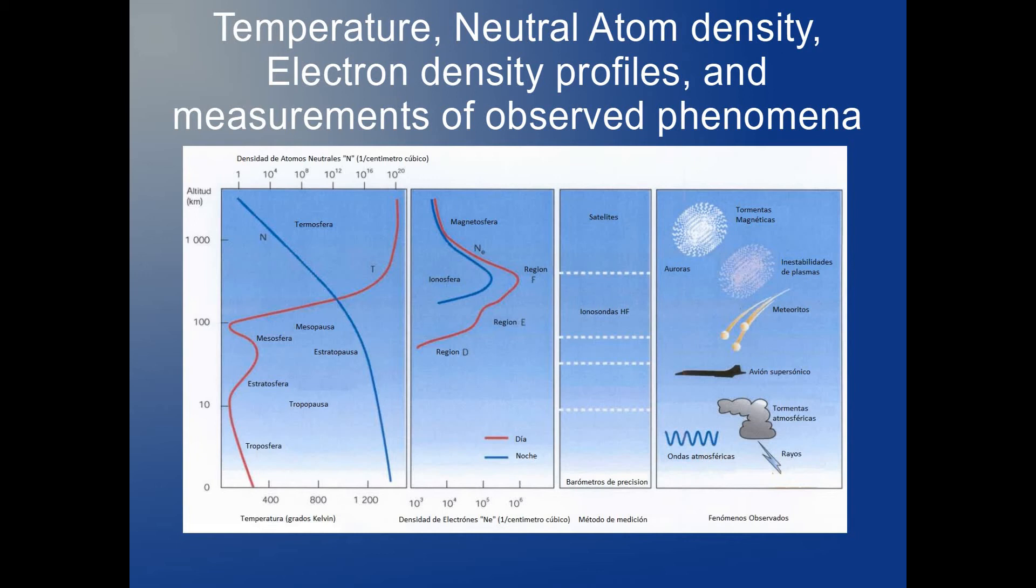The ionosphere was theorized by the German mathematician Gauss in 1839, but it was the experimentalist Guglielmo Marconi from Italy who in 1901 successfully received the first transatlantic radio signal. That transmission originated in Cornwall, England and was received in Newfoundland, Canada. Marconi and his team clearly demonstrated radio communications beyond line of sight.